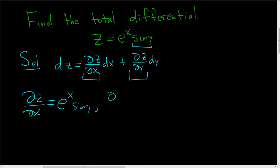And then we'll compute the derivative of z with respect to y, the partial derivative with respect to y. Now we're going to treat e to the x as constant, and the derivative of sine is cosine, so we end up with e to the x cosine y.